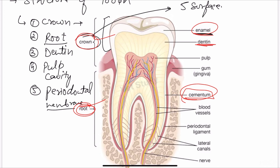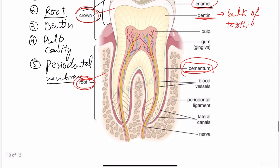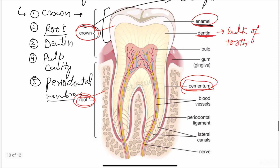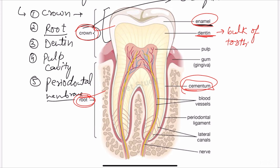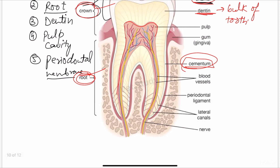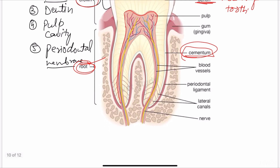The third part is dentin. Dentin is the portion that gives the bulk — it makes up the bulk of the tooth — and it is composed of well-organized dentinal tubules. Next is the pulp cavity, which is a central canal within the dentin. Within the dentin we have a central canal known as the pulp cavity, and this cavity expands to form a pulp chamber in the upper region.